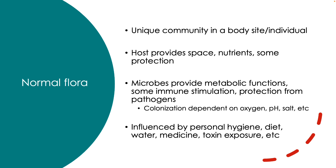The pH of different environments is also different, so you can see different microorganisms that live in lower pH versus higher pH environments. Salt concentration can be very important — salt tolerant microorganisms like Staphylococcus tend to live on the skin where there's more salt, whereas salt intolerant organisms like E. coli tend to live in the gut.